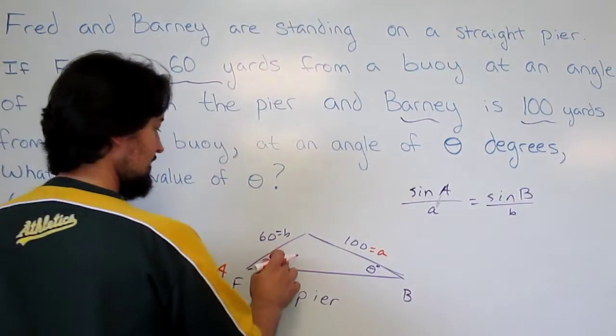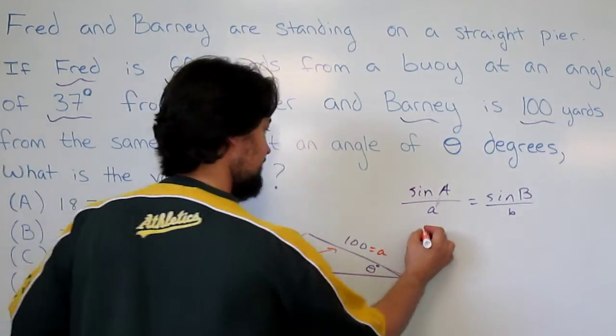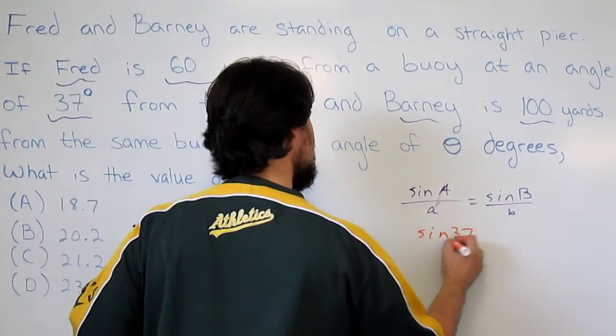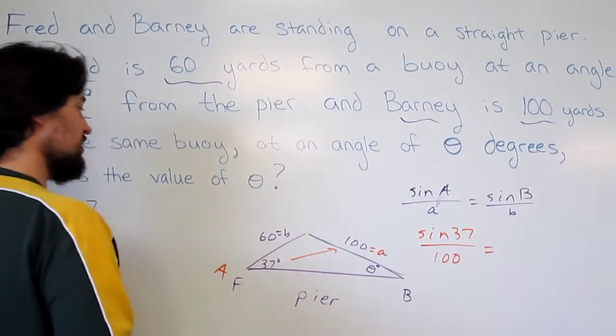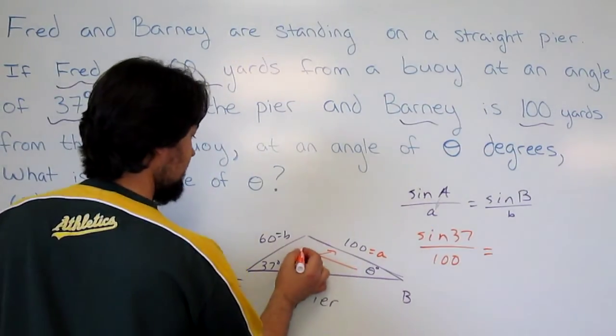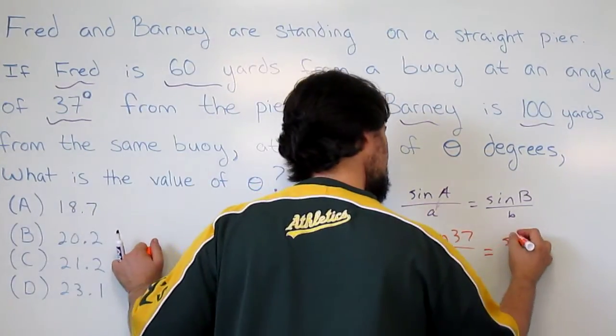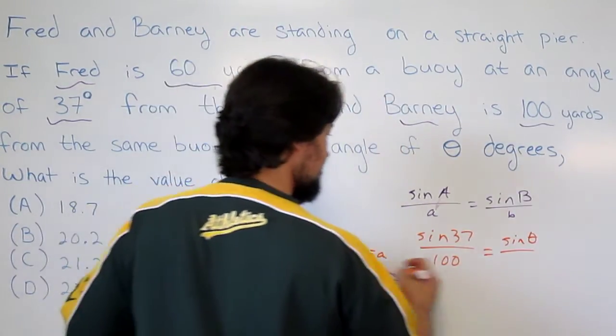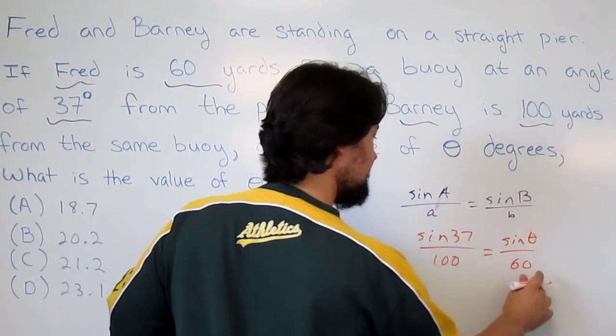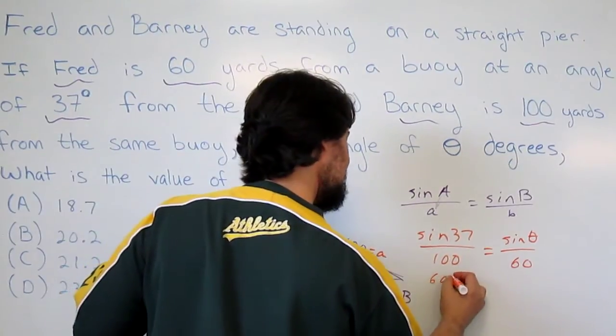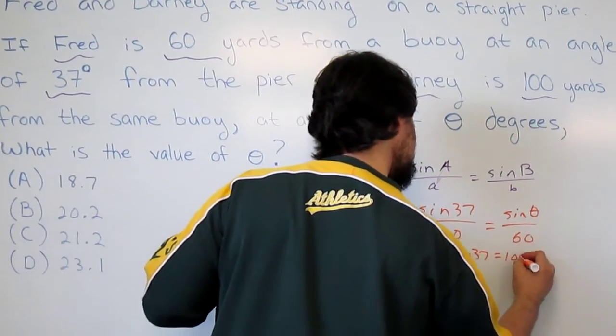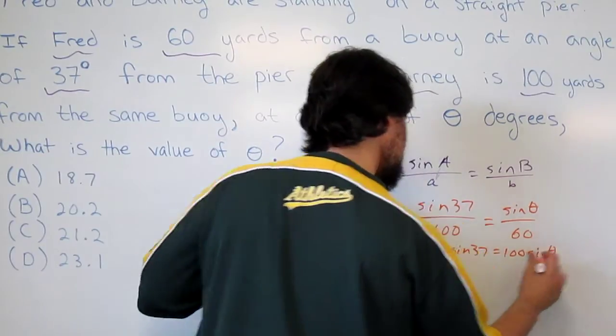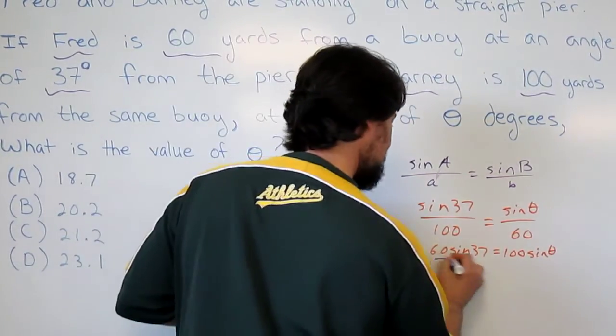We've done that. So sine of 37 over 60 equals sine of theta over 100. The b is 60. Let's cross multiply this. We get 60 sine 37 equals 100 sine of theta. Divide both sides by 100.